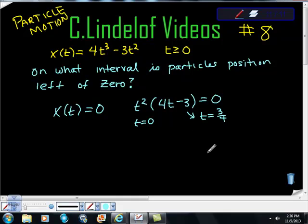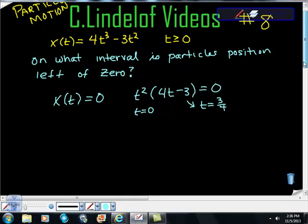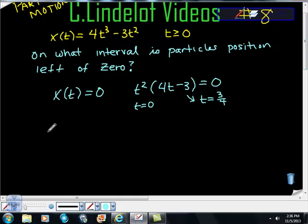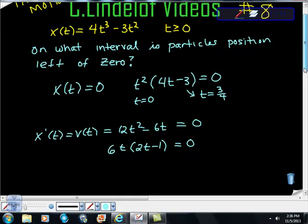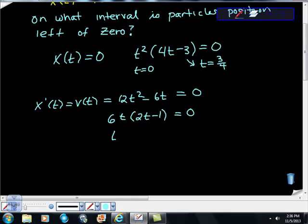So those are the two times where the particle's position are 0. And I just wanted to do a quick test just to make sure which way the particle was moving initially. So I did take the first derivative, and I said okay, the first derivative of position is velocity, and that would be 12t² minus 6t. And I want to know when that's equal to 0. I factored out 6t, and I got 2t minus 1 is equal to 0. t is 0, t is 1/2.